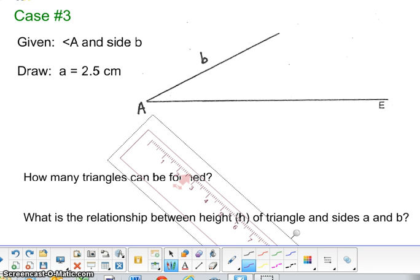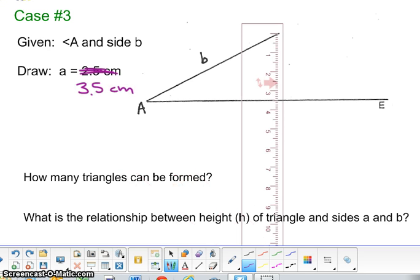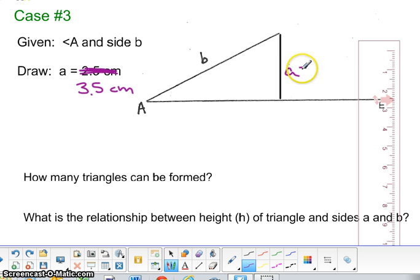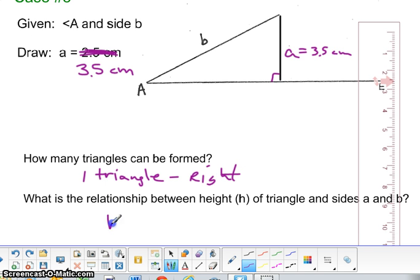Next case, in case number three, I would like to correct a typo. So it is 3.5 centimeters. And once I drew 3.5 centimeters in for side A, you'll notice it's only going to create one triangle, which in this case is a right triangle. So the relationship between the height and side A would be equal to each other, but still less than side B.